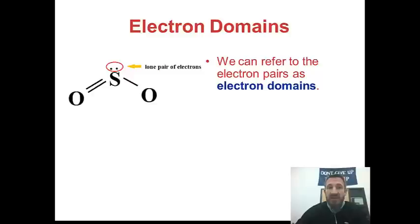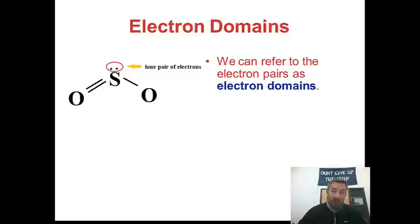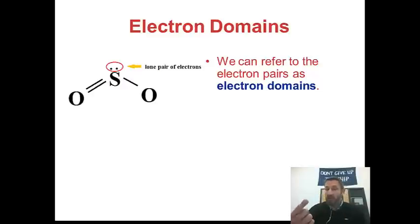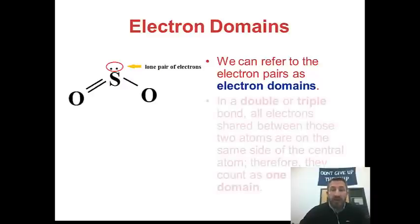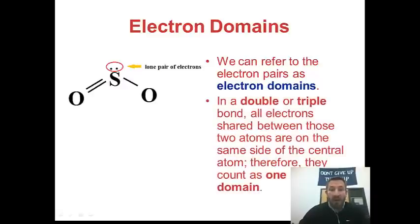On your sheet, we label these as structural domains or structural pairs. The way we'll talk about them from now on, we're going to call them electron domains, because that takes into account three things. One, it includes bonding pairs. Two, it includes lone pairs. And three, multiple bonds — whether double or triple — count as one electron domain. In double or triple bonds, all electrons shared between two atoms are on the same side of the central atom, so it's considered one electron domain.